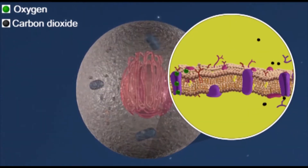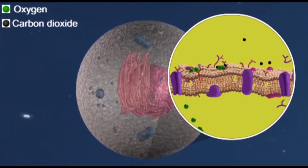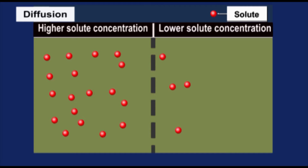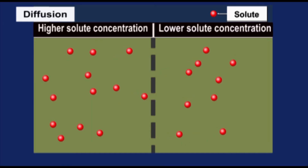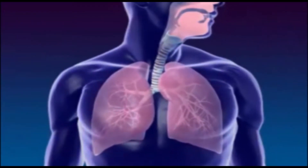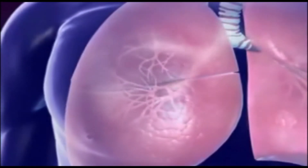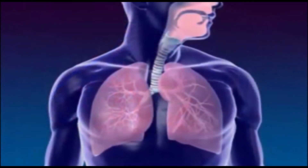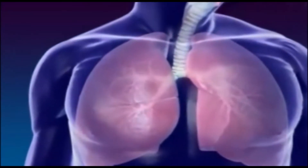If the substance moves from a different reason, such as pressure or force, that is not diffusion. There are several examples of diffusion in our body. For example, during the process of breathing, oxygen enters the body and carbon dioxide leaves the body. The oxygen we breathe in enters the bloodstream by the process of diffusion.